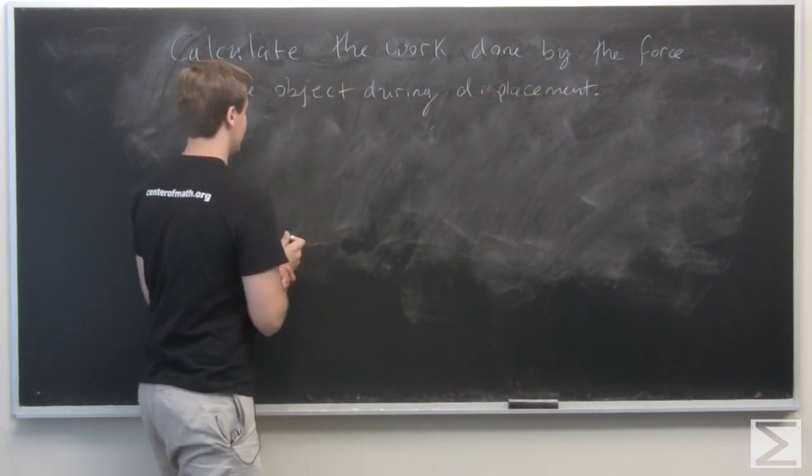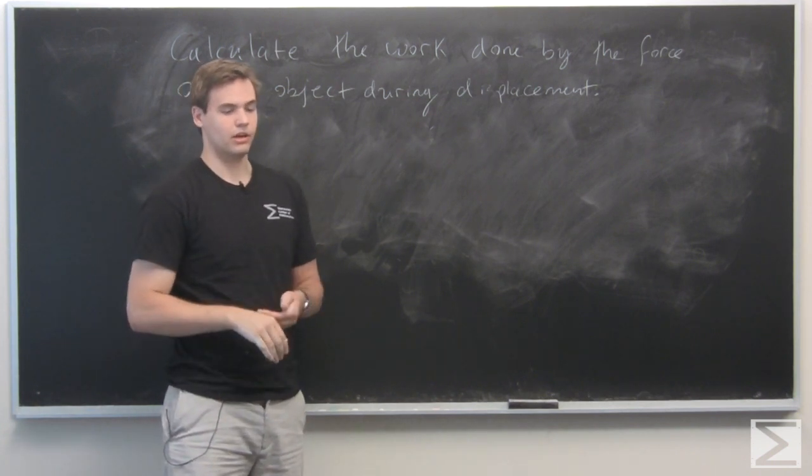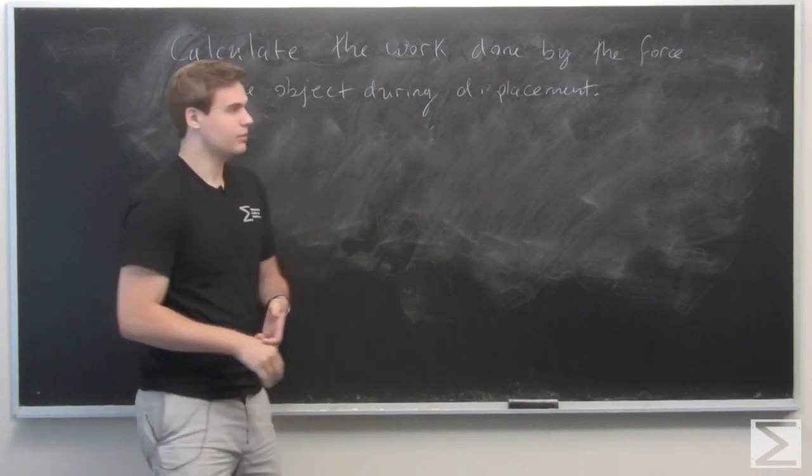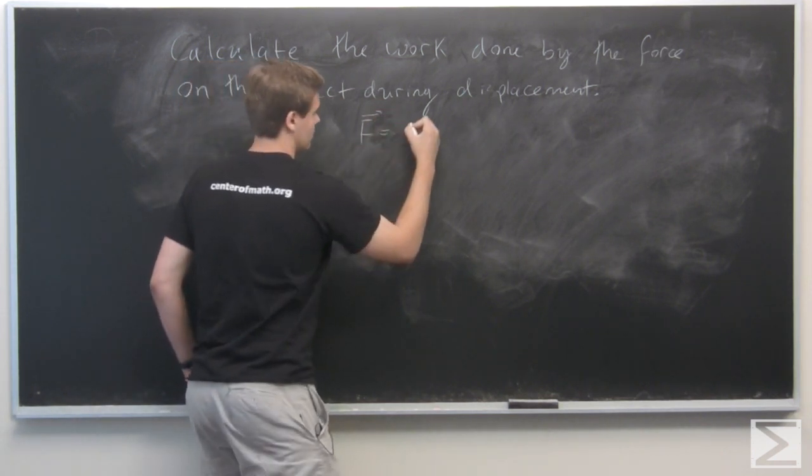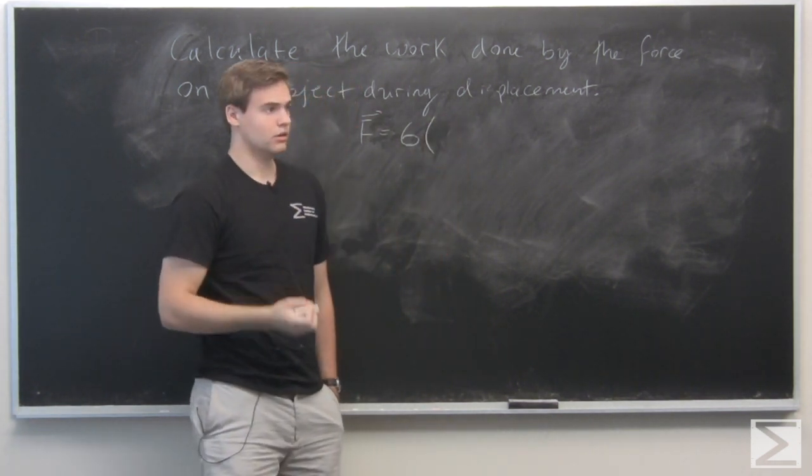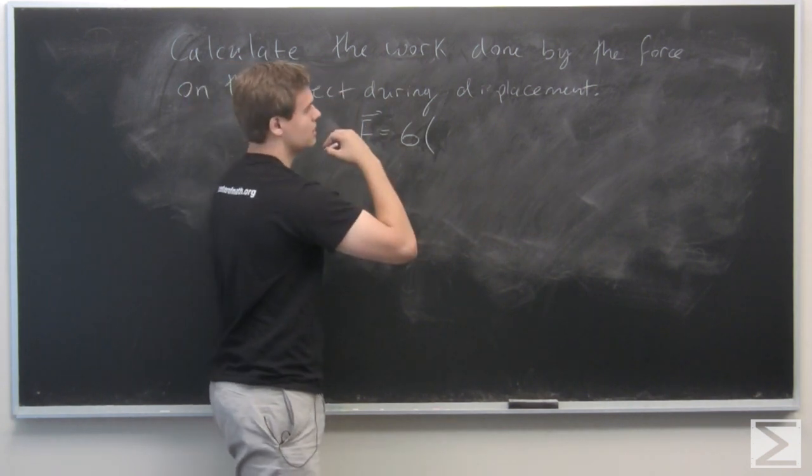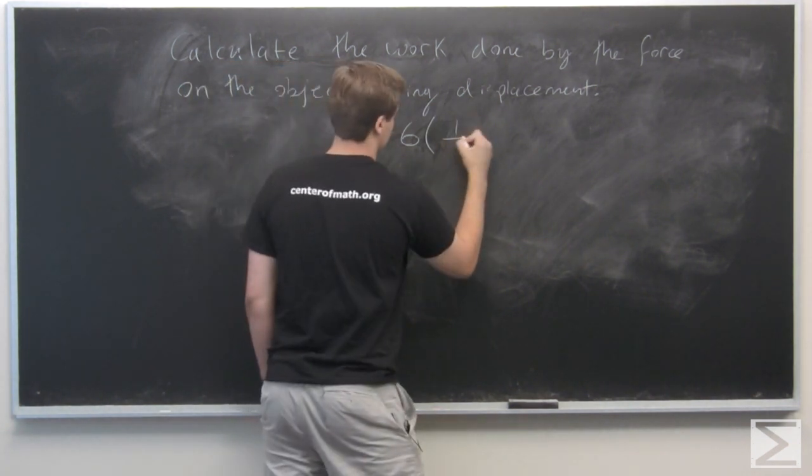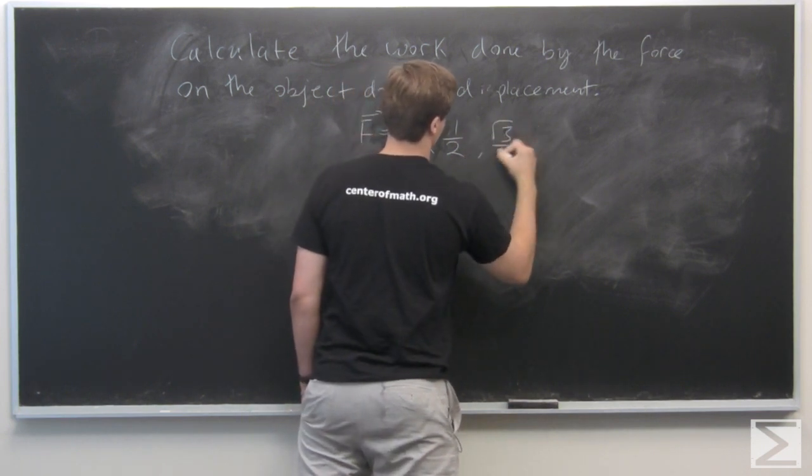Saying that F has magnitude 6 and makes a 120 degree angle with the positive x-axis means that F is going to be 6 times the unit vector in that direction. If you think of 120 degrees from the positive x-axis, that's going to be negative 1 half, comma, root 3 over 2.